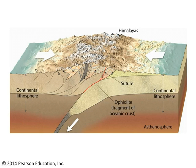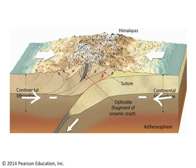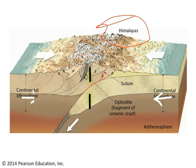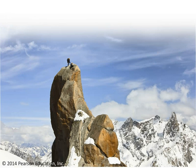The third circumstance is where both plates have continental lithosphere at their leading edges. This usually happens after oceanic lithosphere has been completely subducted and two continents ram into one another. Since both are too buoyant and low in density to subduct, they crunch together, thickening the crust and raising up mountains. In this diagram these are labeled as the Himalayas, but it could be any continent-continent collisional mountain belt. Another example is the Alps, forming due to convergence of the African and Eurasian plates, and the same process formed the Appalachian Mountains in the late Paleozoic.